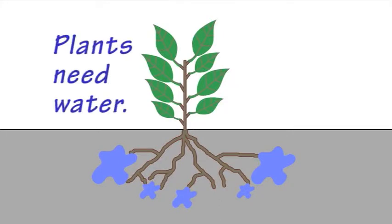Plants need water to grow. The roots absorb water from the ground, and it spreads up the stem to the leaves.